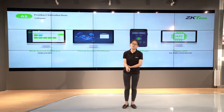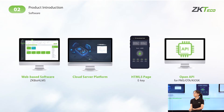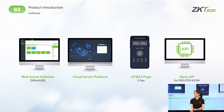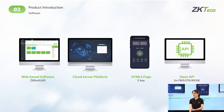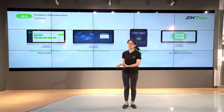Next is also the most important part of the solution: our platform software, which consists of four parts. The first is the web-based software, the ZigBee gateway HLMS — which stands for Hotel Lock Management System. The second is our cloud server platform. The third is our H5 page, which is the key of the solution. And the last one is the open API.